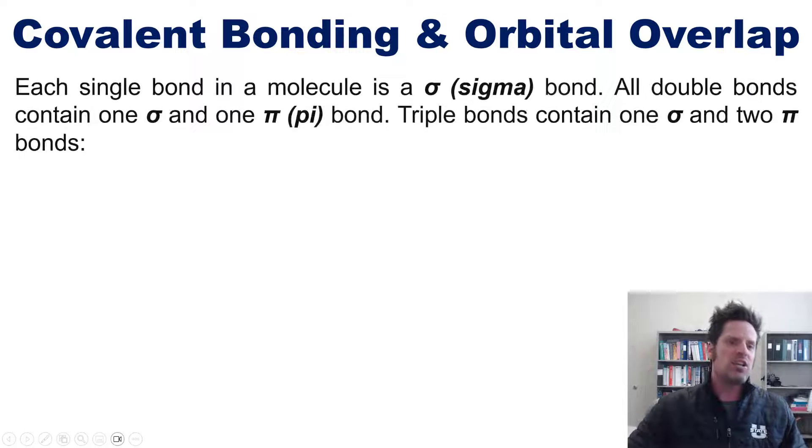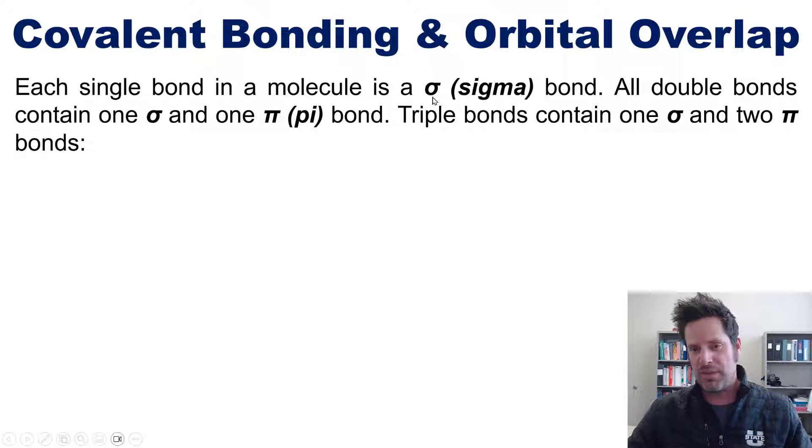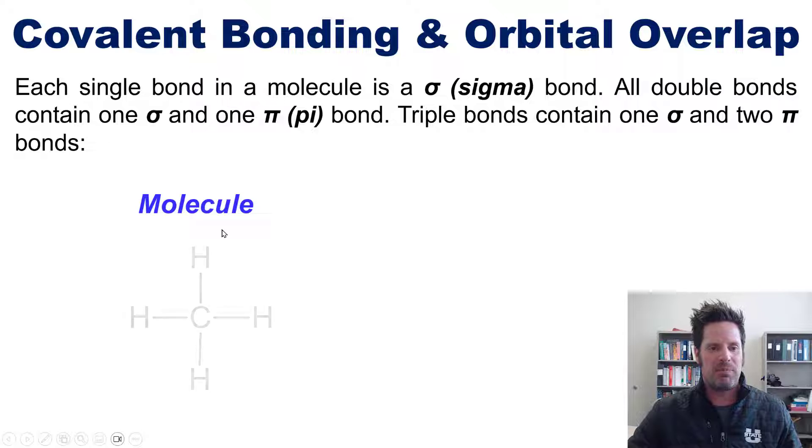So as it turns out, each single bond in a molecule is called a sigma bond, using this Greek letter sigma. In contrast, all double bonds contain one sigma and one pi bond, and this is the Greek letter pi. Triple bonds, however, contain one sigma and two pi bonds. We can see that in some examples.